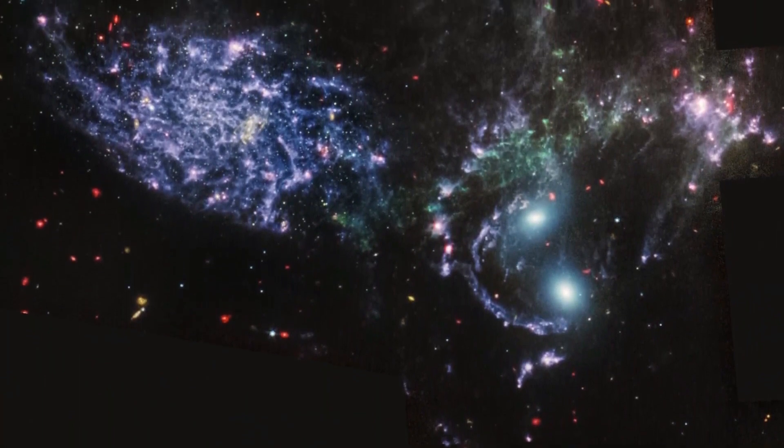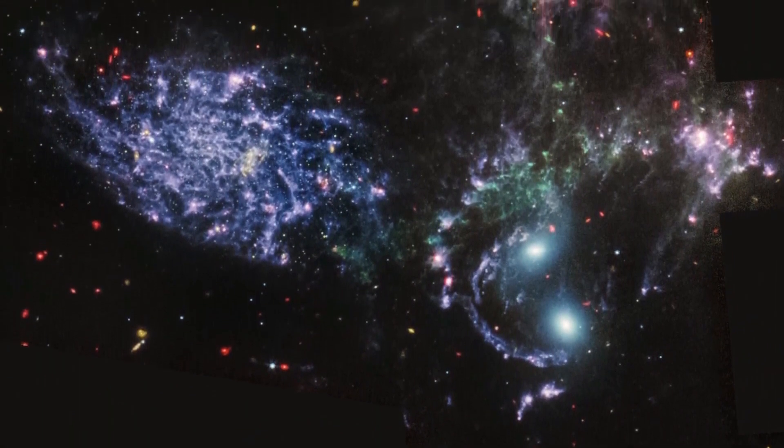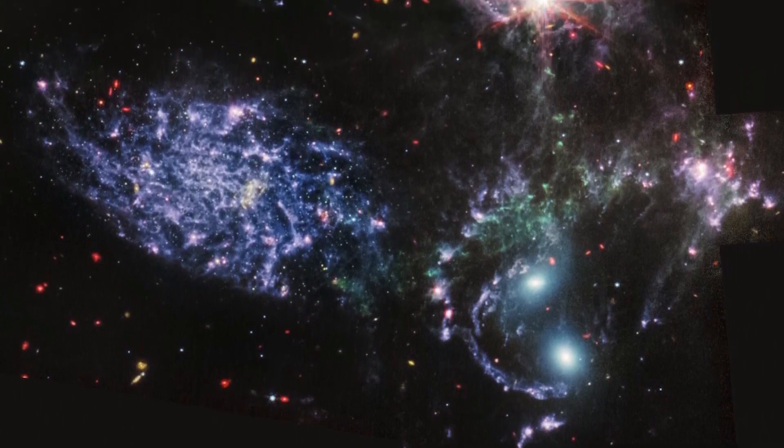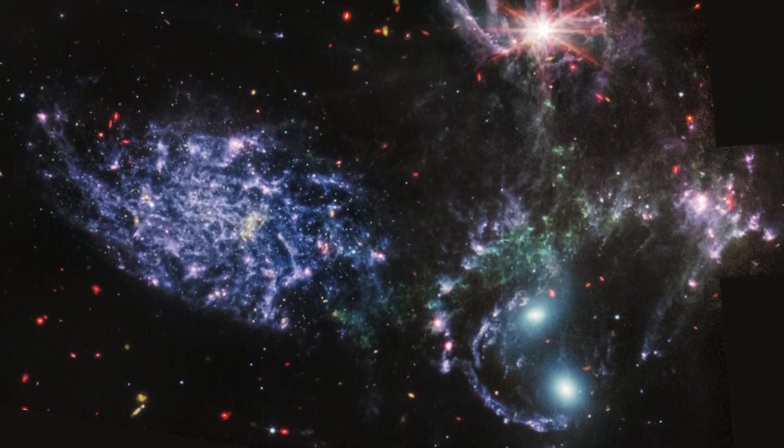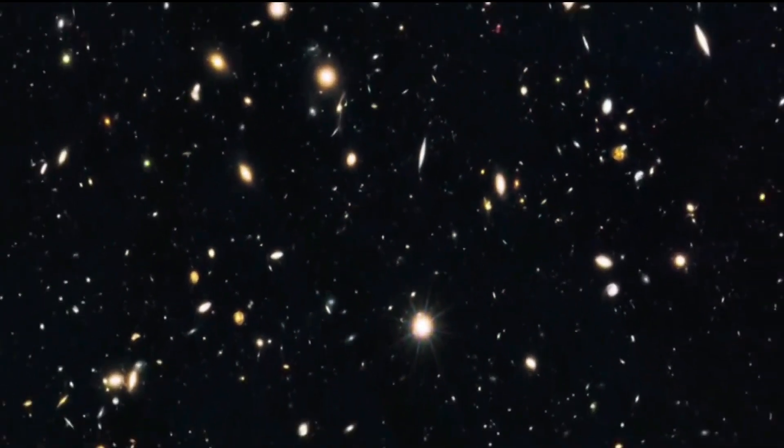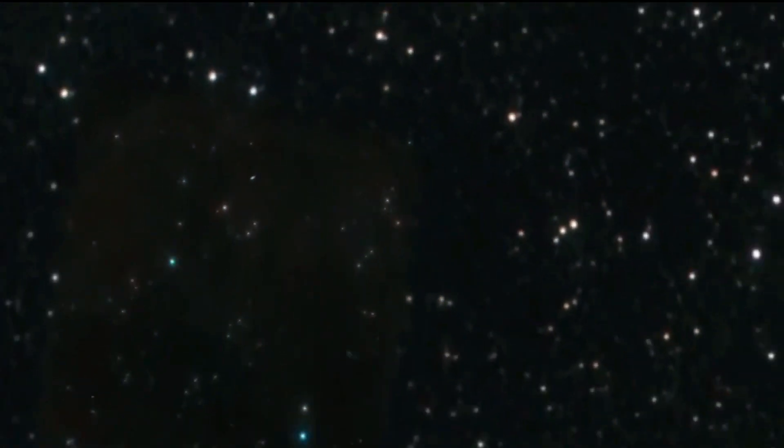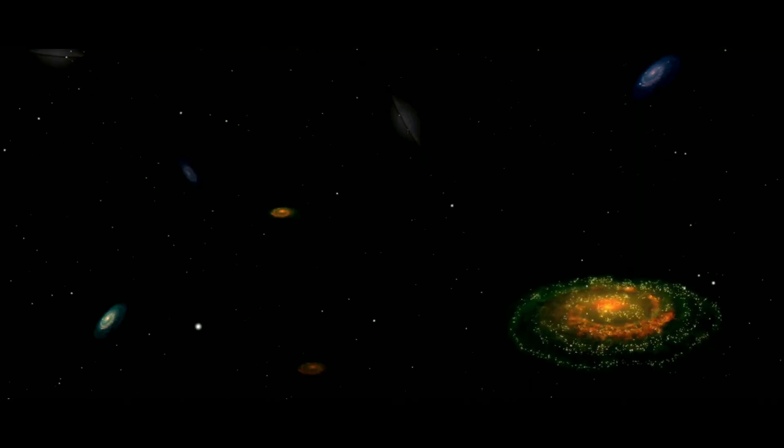it can tell us whether the formation of early galaxies is compatible with the concordance model, in particular with the hypothesis of dark matter. That's because galaxy formation in a universe with dark matter is expected to proceed slowly and gradually. In this case, one does not expect young galaxies to be large.